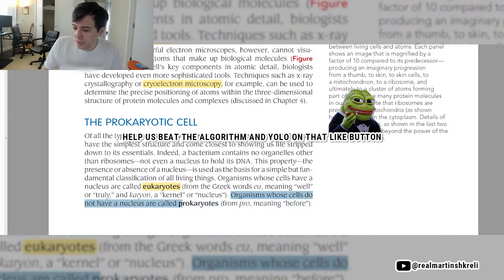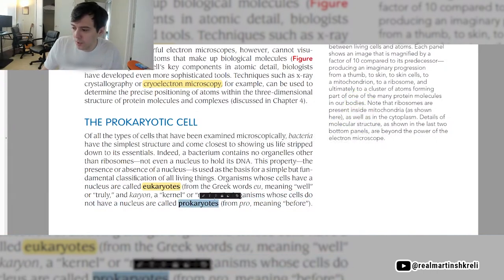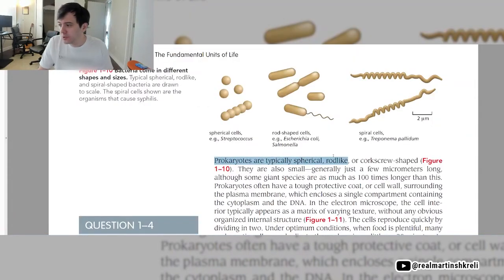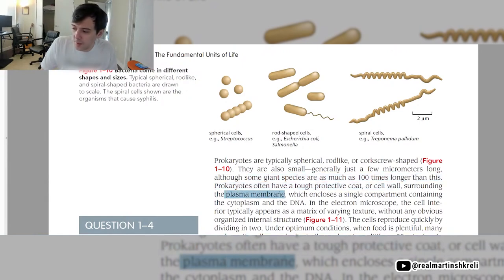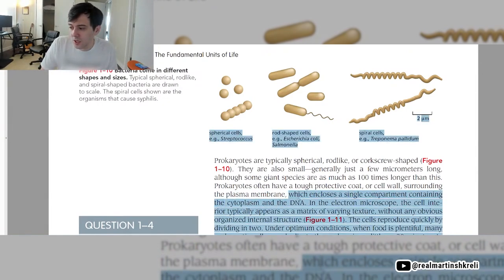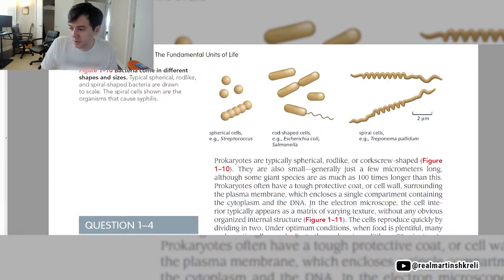Organisms whose cells do not have a nucleus are called prokaryotes. Prokaryotes are typically spherical, rod-like, or corkscrew shaped. They're also small, generally just a few micrometers long, although some giant species are as much as a hundred times longer than this. Prokaryotes often have a tough protective coat or cell wall surrounding the plasma membrane, so it's literally like two cell walls, which encloses a single compartment containing the cytoplasm and DNA, kind of all mixed up in one soup.